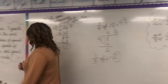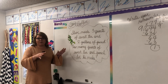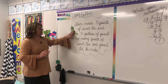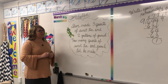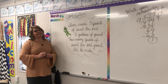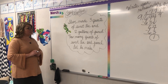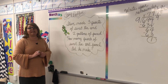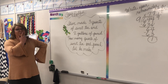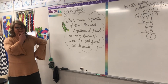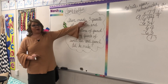Let's look right quickly over here. We have a story problem. This one is a lot like the one you have on your sheet. It says: Steve made three quarts of sweet tea and two gallons of punch. How many quarts of sweet tea and punch did he make? If you're thinking this is a measurement problem, you are correct.